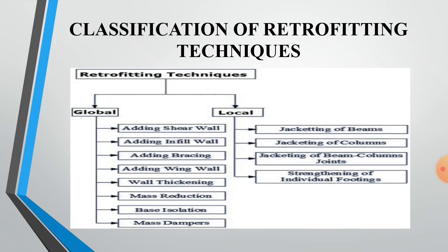The classification of retrofitting techniques covers global and local methods. Global techniques include: adding shear wall, adding infill wall, adding in bracing, adding wing wall, wall thickening, mass reduction, base isolation, and mass damper. Local techniques include: jacketing of beam, jacketing of column, jacketing of beam-column joint, and strengthening of individual footing.